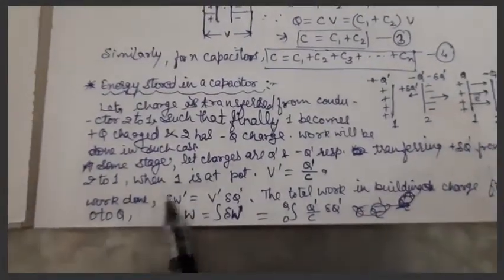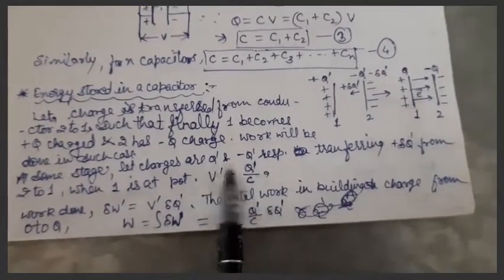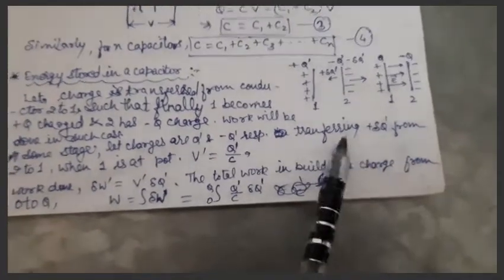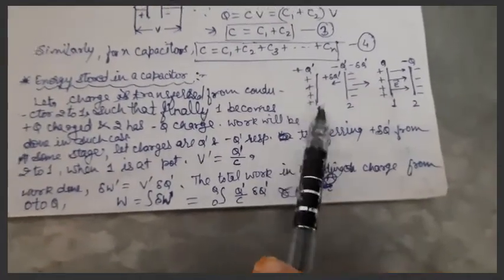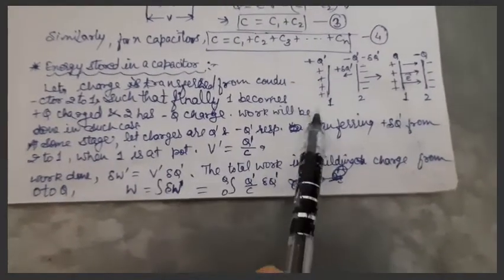At some stage we will have a charge plus q dash and minus q dash as shown here. At that time we are transferring plus delta q dash as I have already explained. In this case, conductor one will be at potential V dash.